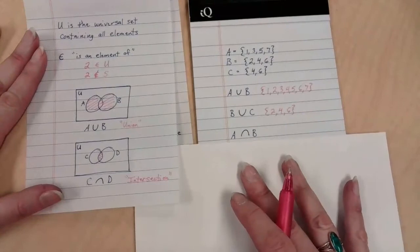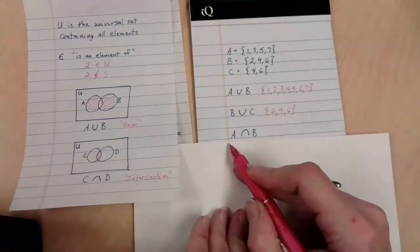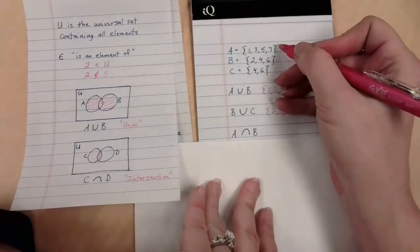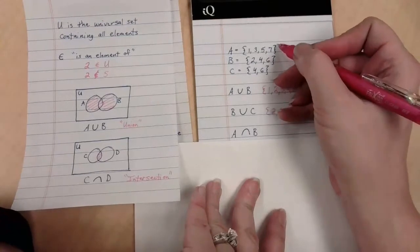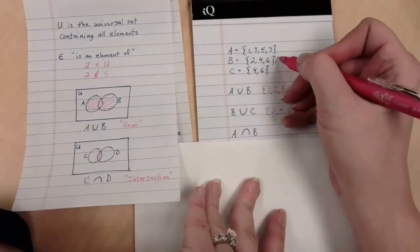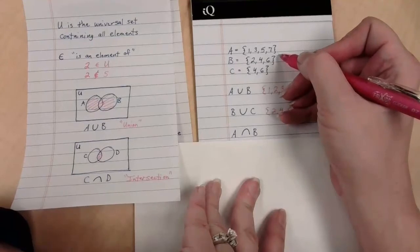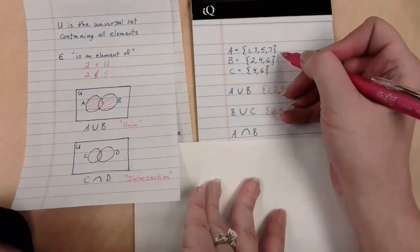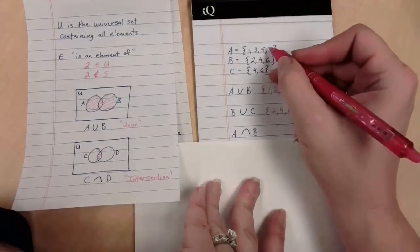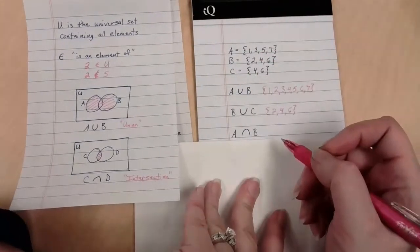What does that mean for maybe some intersection stuff? What if I have the intersection of A and B? So here's A. Here's B. If I think about this in terms of a Venn diagram, where do these two overlap?